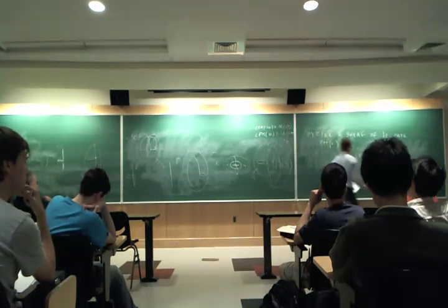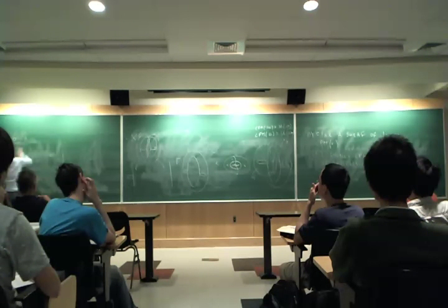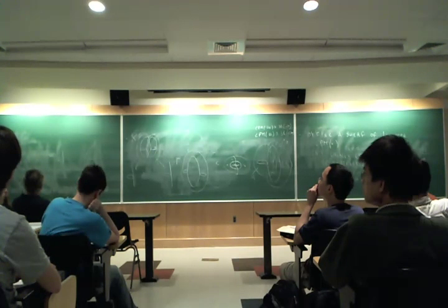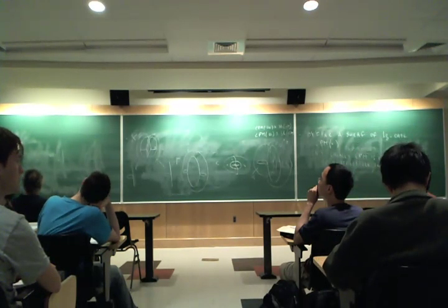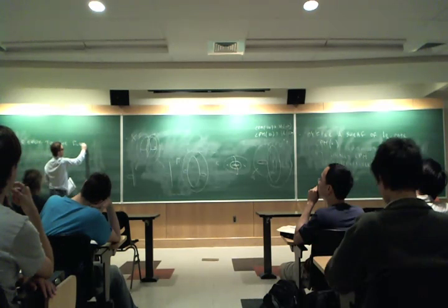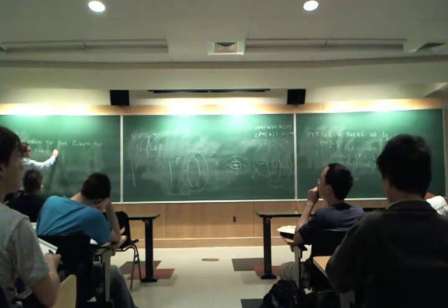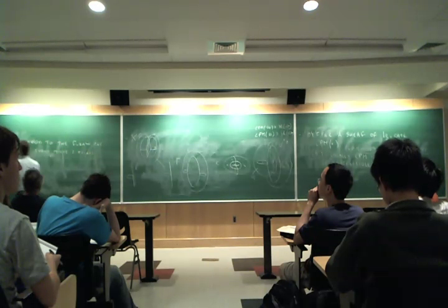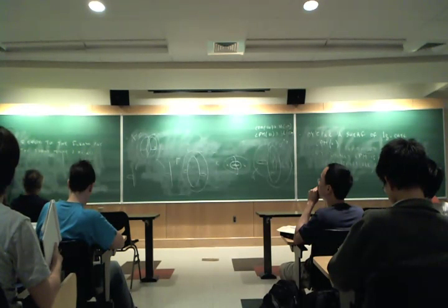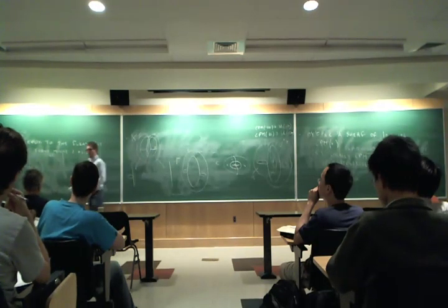So our conjecture is that the global section CPM gamma is quasi-equivalent to the Fukaya category of the torus minus the two points. And further, we prove that CPM gamma, so this is a theorem, CPM gamma, so the global section of the sheaf, is quasi-equivalent to Perf X where X is the banana curve.